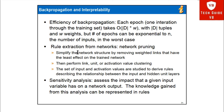Rule extraction from networks involves network tuning, which simplifies the network structure by removing weights and weighted links that have the least effect on the trained network. Then link and activation value clustering is performed. The set of input and activation values are studied to derive rules describing the relationship between the input and hidden unit layers.